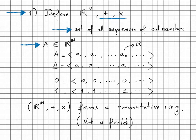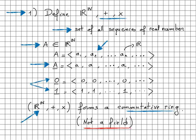We write capital A for an element of R^N, with elements being real numbers a_n, and a with a bar below it is kept for constant sequences. In particular, we have 0-bar and 1-bar, which are constant sequences — the additive and multiplicative identity of the ring formed by R^N under addition and multiplication. We also noted that this is not a field because we have elements that are not invertible.